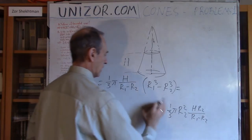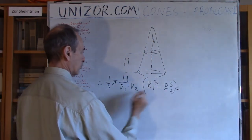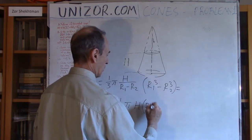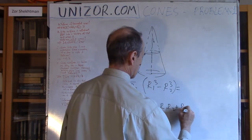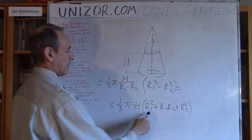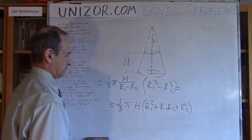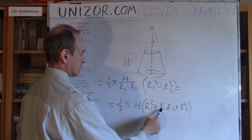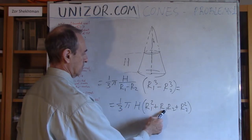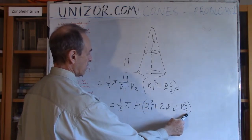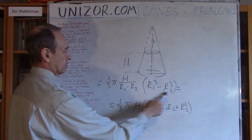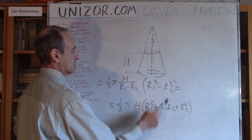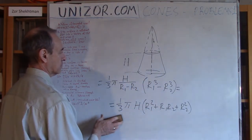As we know, R1³ − R2³ divided by (R1−R2) equals R1² + R1·R2 + R2². If you don't remember, you can multiply it out to verify. So the volume of the truncated cone is (1/3)π H (R1² + R1·R2 + R2²). This is the formula and the answer.